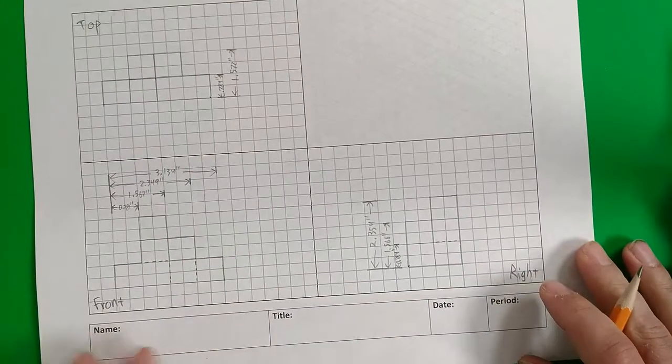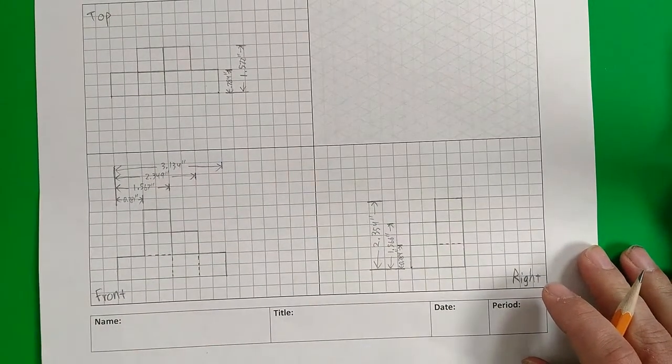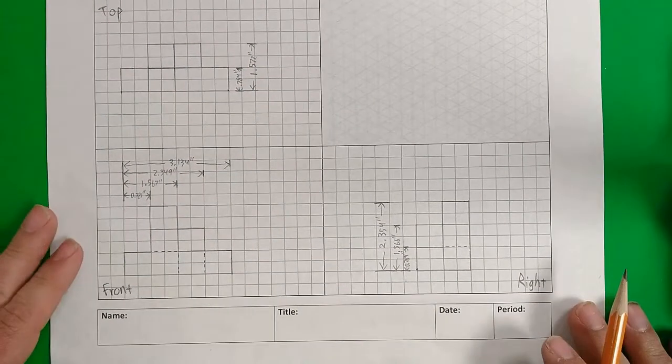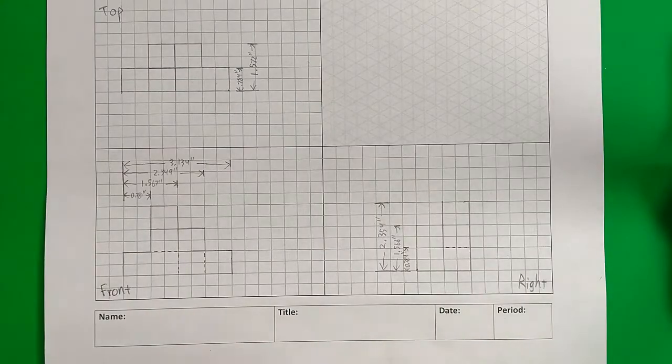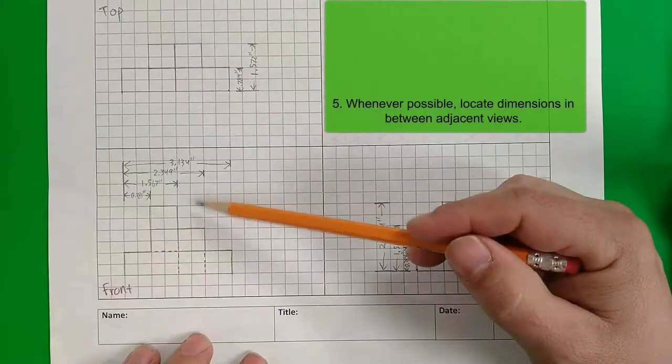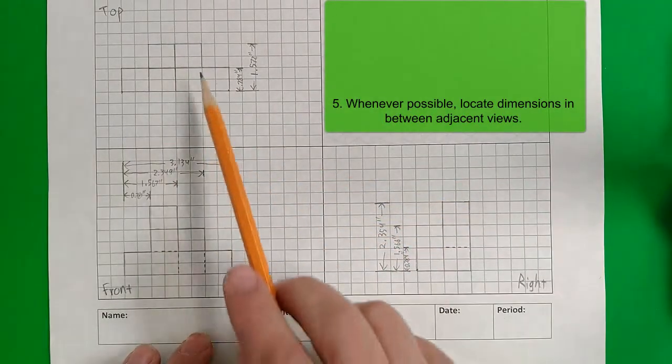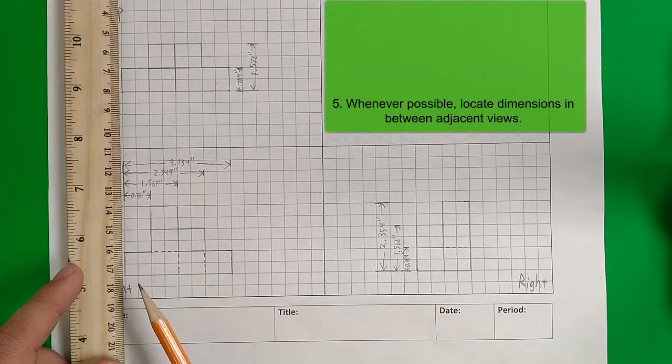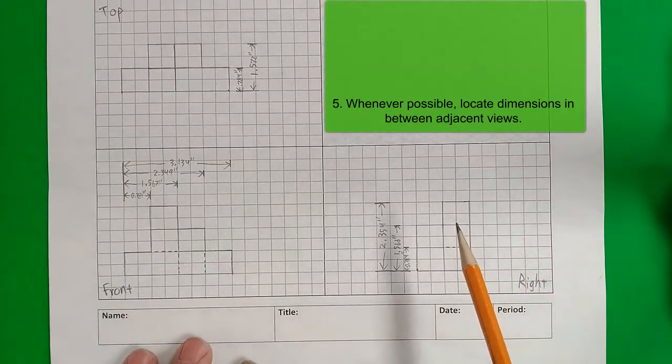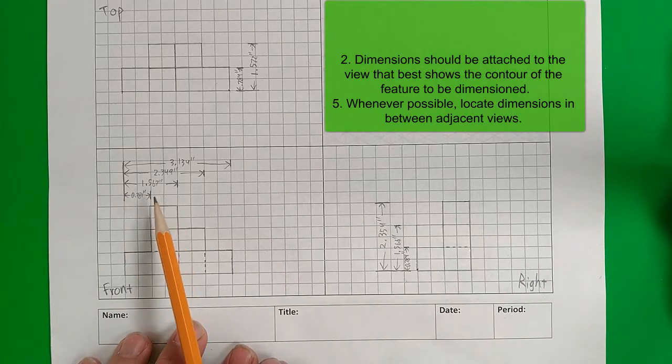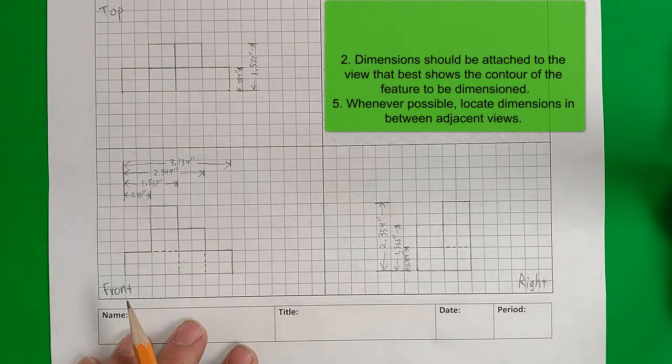Now, it would seem as if we have everything measured here and we have the measurements we need. So let's review the dimensioning guidelines. Whenever possible, put dimensions between adjacent views so that the measurements are shared between the views. It helps if your views are aligned properly before you do that.